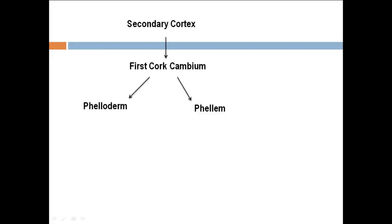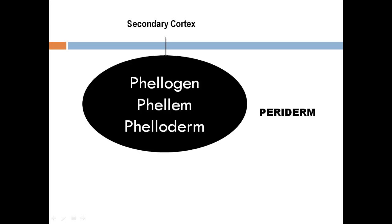Finally, we revise: secondary cortex gives rise to cork cambium which gives rise to phelloderm and phellem, and these are collectively called periderm. I think this should make your concepts a little clearer and help you understand it in a better way.